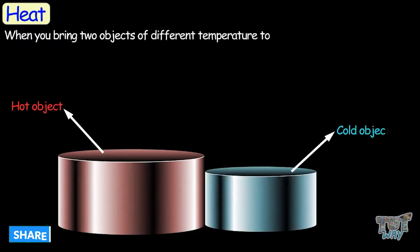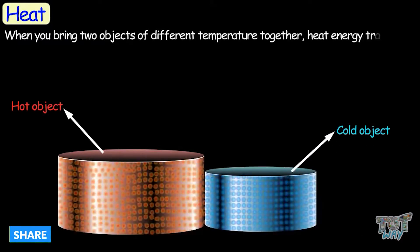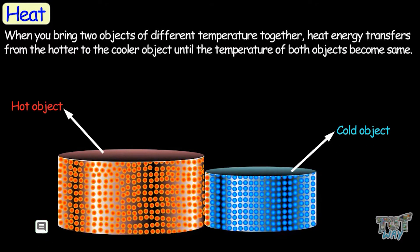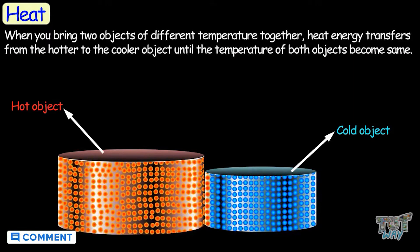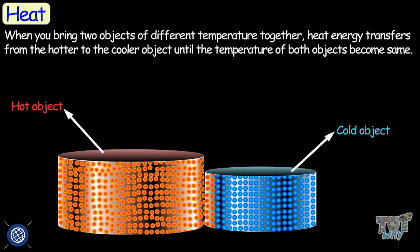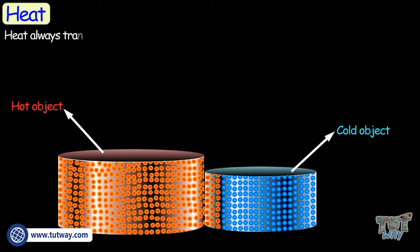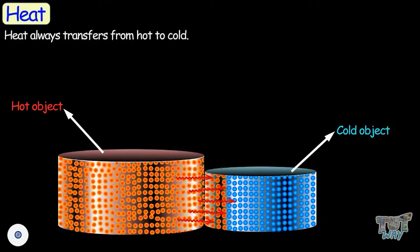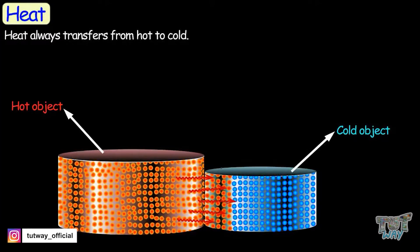When you bring two objects of different temperatures together, heat energy transfers from the hotter to the cooler object until the temperature of both objects becomes the same. Heat always transfers from hot to cold.